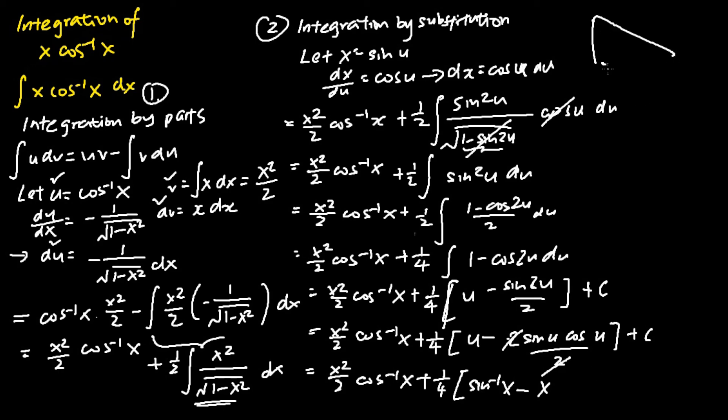we first need to draw a right angle triangle in which my angle u is here, and then my opposite length is x. My hypotenuse length is 1. So basically, the adjacent length is the square root of 1 minus x squared. And since we have this particular diagram, we can now find my cosine u.